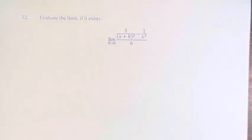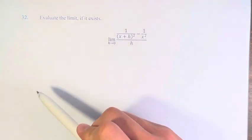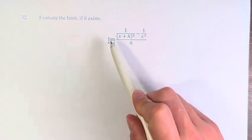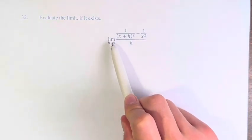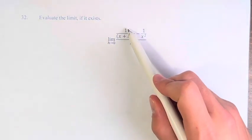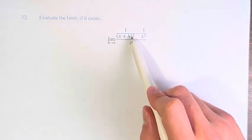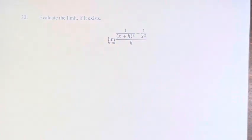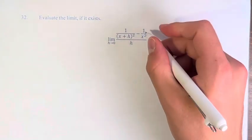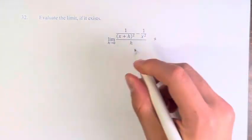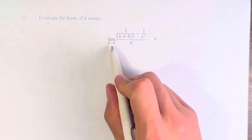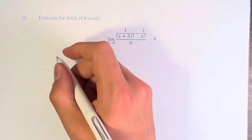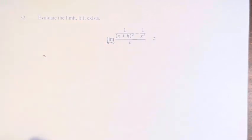Hello and welcome back to another video. In this problem we have to evaluate the limit if it exists. We have the limit as h approaches 0 of 1 over (x plus h) squared minus 1 over x squared, all times h. The issue here is that we can't divide by 0 by directly plugging h in, so what we have to do is simplify.